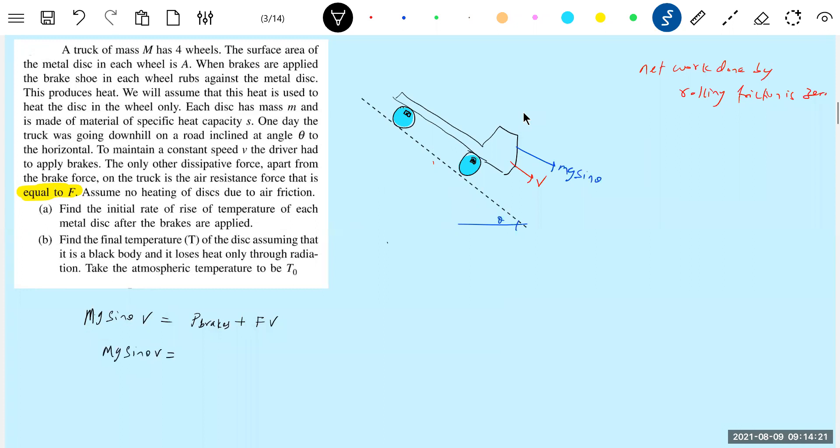Proceed like this. What is the power dissipation by the brakes? For the initial rate of rise of temperature of each metal disc after the brakes are applied. I think this is what I am asked. This is what I am just carrying on. To find the final temperature of disc, assuming that it is a blackbody and loses heat only through radiation. I think this is the second part of the problem. We are going to bring the radiation into the picture. Okay, first part, let me do it. What shall I do?